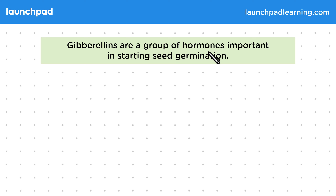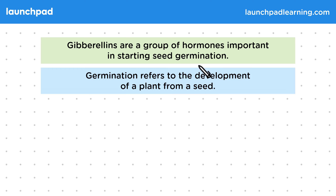Gibberellins are a group of hormones important in starting seed germination. Germination refers to the development of a plant from a seed.